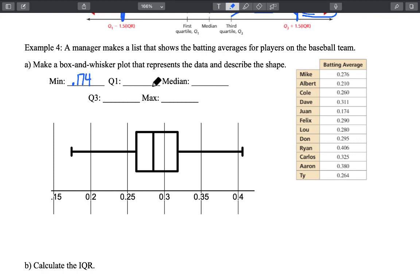Our minimum value is going to be 0.174. When we calculate our quartile 1 it's going to give us 0.262. Our median batting average is 0.285. Quartile 3 is 0.318 and then our maximum or our best batting average is 0.406.